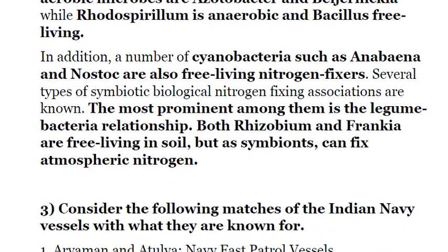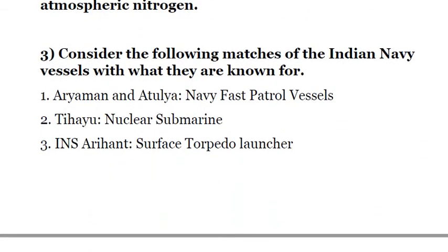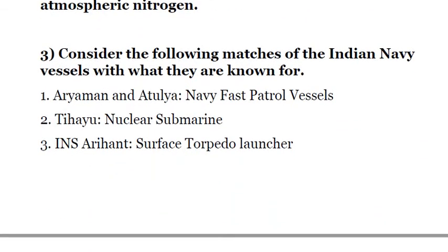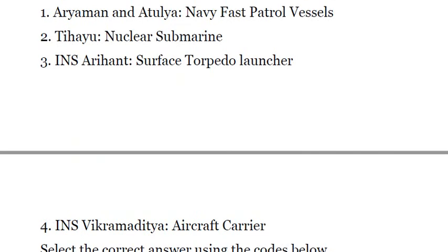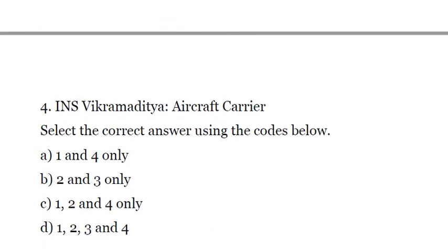Third question: consider the following matches of Indian Navy vessels with what they are known for. One, R.M.1 and Atulia — Navy fast patrol vessels. Two, INS Teahu — nuclear submarine. Three, INS Arihant — surface torpedo launcher. Four, INS Vikramaditya — aircraft carrier. Only one and four are correctly matched; two and three are not correctly matched, because INS Arihant is a nuclear submarine. India's Navy is in a modernization mode with an advanced vessel technology program developing nuclear submarines. INS Arihant is the first such nuclear submarine and it is indigenously built. The answer is A — one and four.